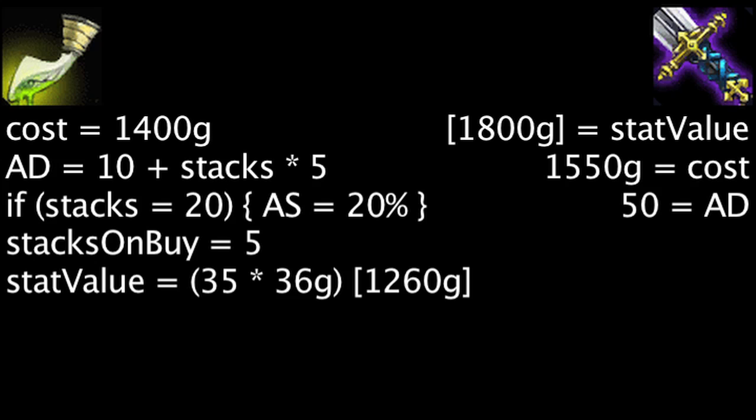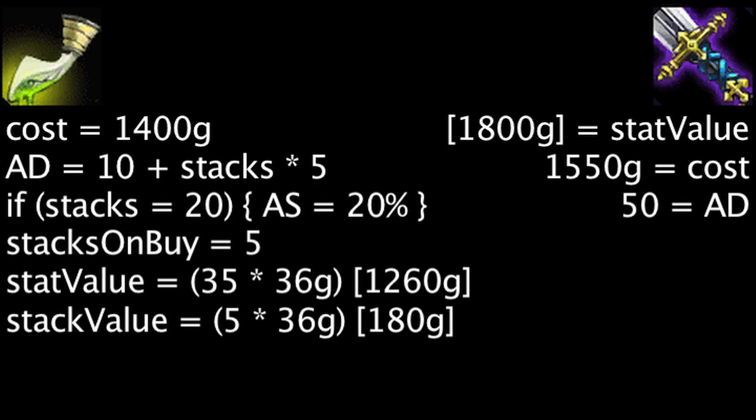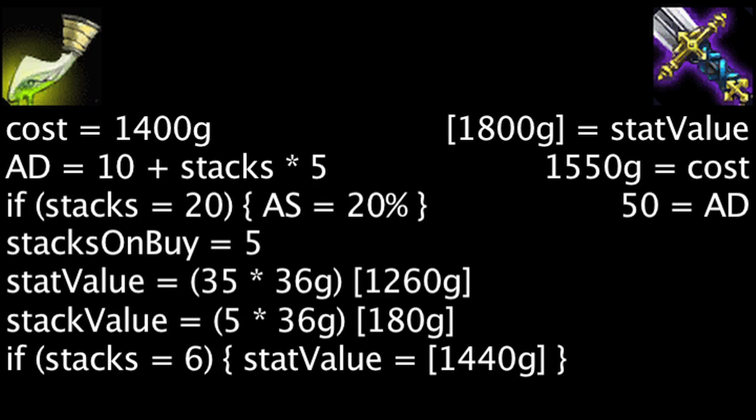For reference, one saves 250 gold on attack damage when purchasing a BF Sword. Each stack grants attack damage worth 180 gold, making the item cost-effective at 6 stacks or more.